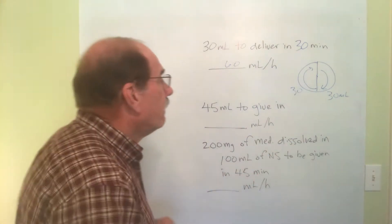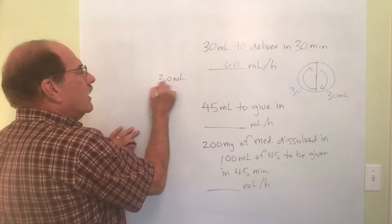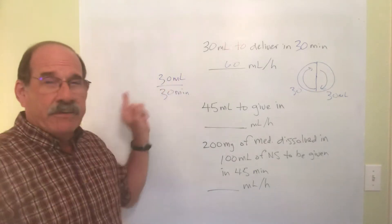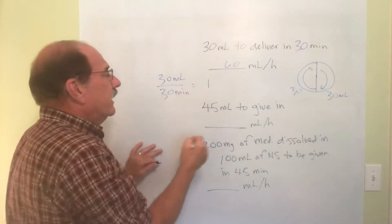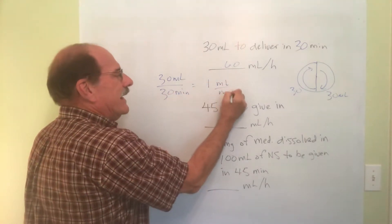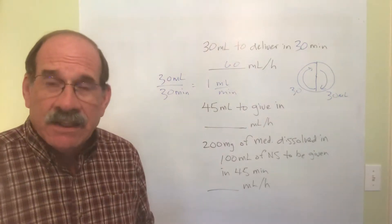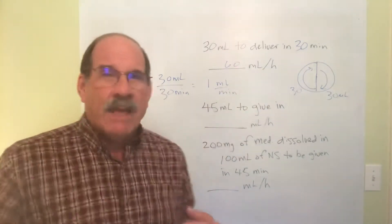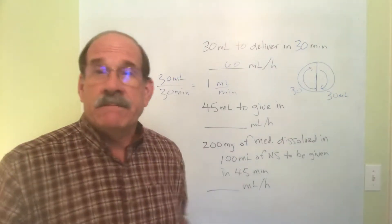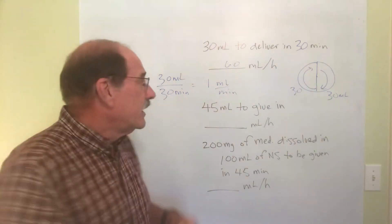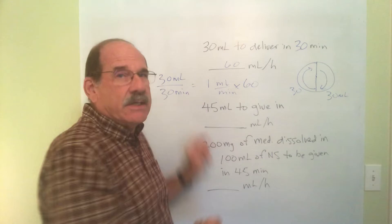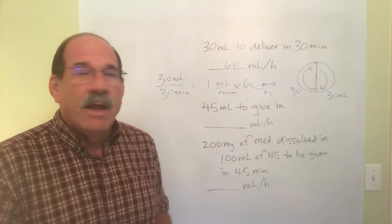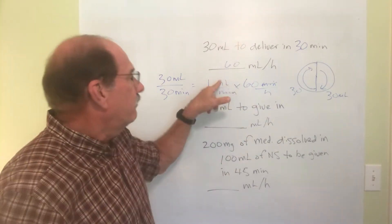Let's do it mathematically because some problems you can't work out mentally. We have 30 milliliters divided by 30 minutes — 30 over 30 is 1 milliliter per minute. But I don't need milliliters per minute; I need milliliters per hour. There are 60 minutes in an hour, so I take the milliliters per minute and multiply by 60 because there are 60 minutes per hour. That gives 60 milliliters per hour.